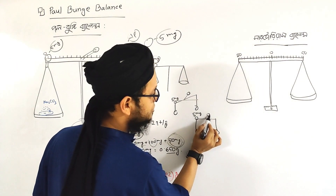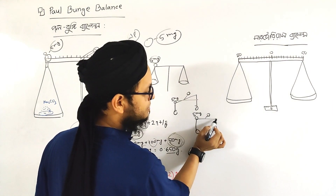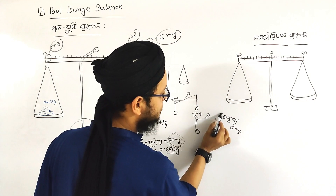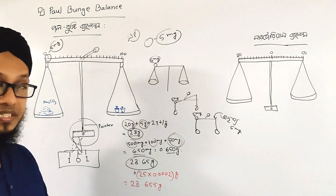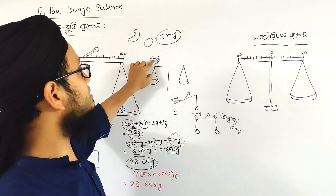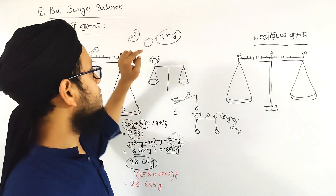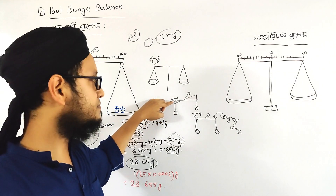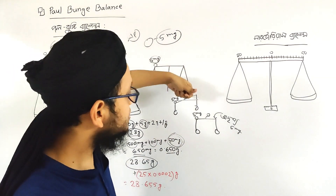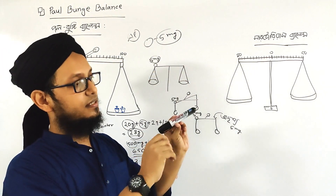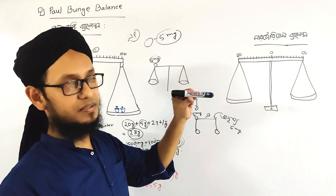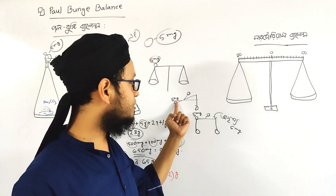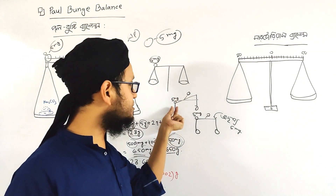I will give this screw. If I have this one, I will give this one 5 mg. I will give this one 5 mg. If I have this screw, I will balance the screw. The screw — I will have this one 5 mg. It will beat the screw.